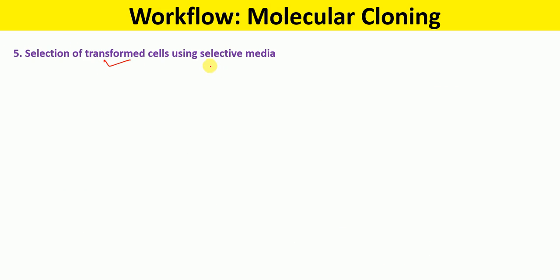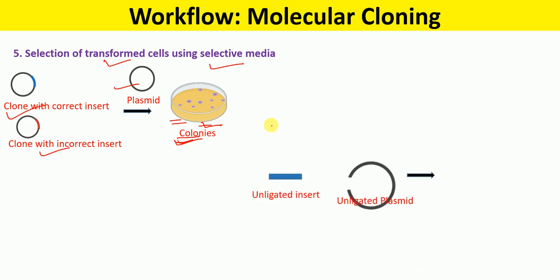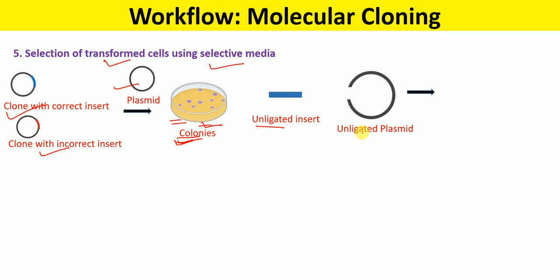For that, we perform selection of transformed cells using a selective media such as ampicillin media. Bacteria that have taken up the clone with correct insert, clone with incorrect insert, or the plasmid alone will all grow on the plate containing the antibiotic, and we will see bacterial colonies for all three kinds of clones. However, we will not see any colonies for unligated insert, unligated plasmids, or bacteria with no plasmid.